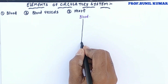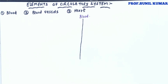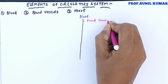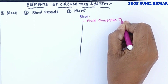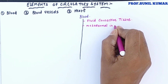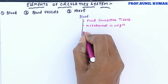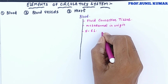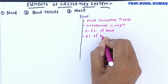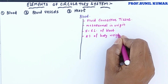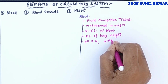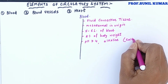Whenever we talk about blood, we need to understand some important characteristics. First, blood is a fluid connective tissue — it is the only connective tissue available in liquid state. Blood is mesodermal in origin. In a normal adult there will be five to six liters of blood, approximately eight percent of total body weight. The pH of blood is 7.4, which is alkaline in nature.